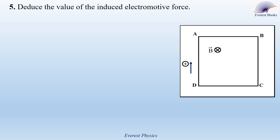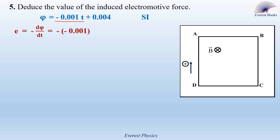Let's move to Part 5. Deduce the value of the induced electromotive force. In the previous slide, we found the expression of the magnetic flux crossing the loop. To calculate the value of the electromotive force, we use Faraday's law. We must differentiate the expression of phi with respect to time. The derivative of minus 0.001T with respect to time is equal to minus 0.001. And the derivative of the constant 0.004 with respect to time is equal to 0. Then E is equal to 0.001 volts.